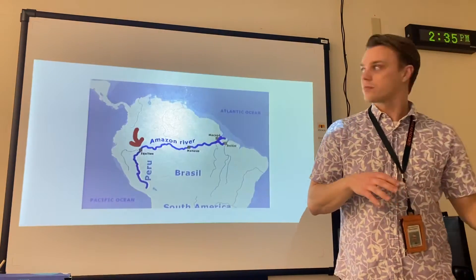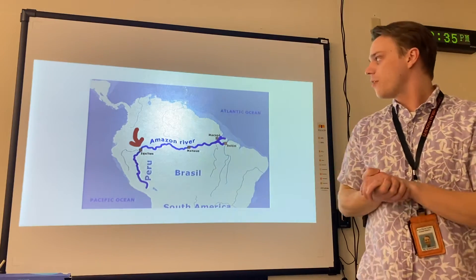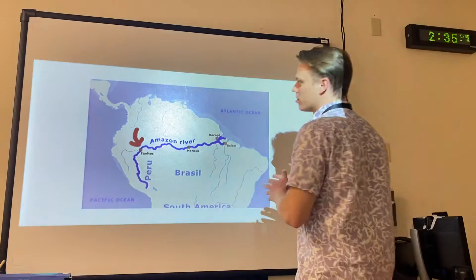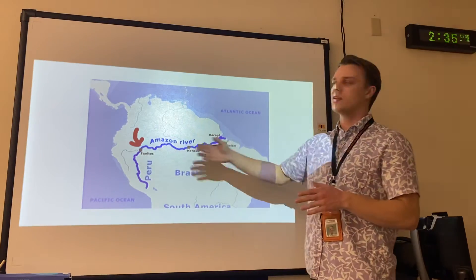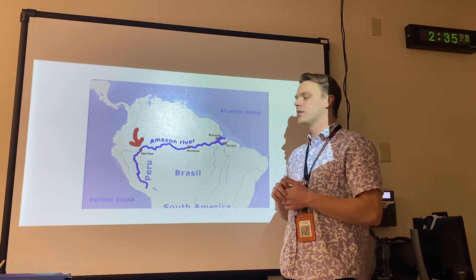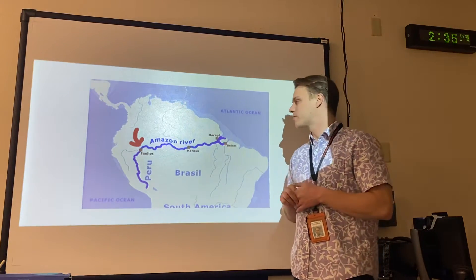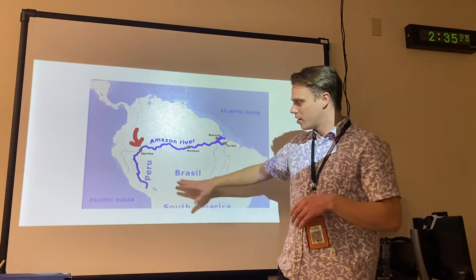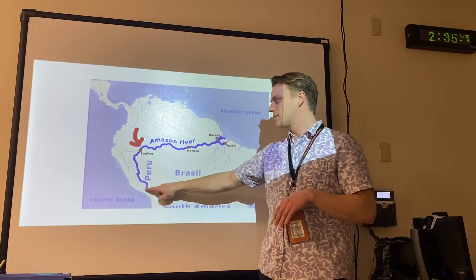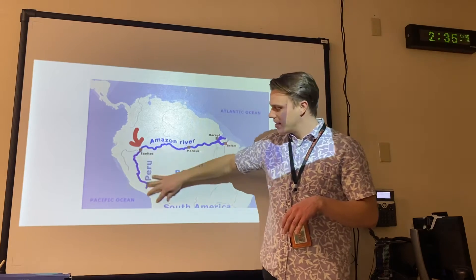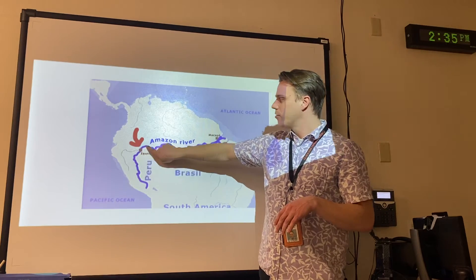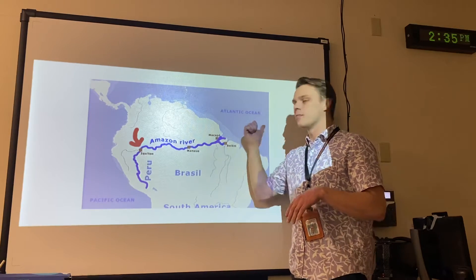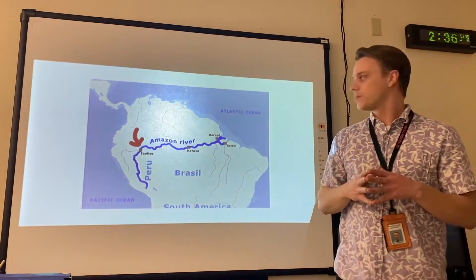As you saw from the previous images, there's a lot of focus on the Amazon River. The Amazon River flows all the way from the western side of South America in the Andes, and it travels all the way across South America through Brazil, and comes out the east side.